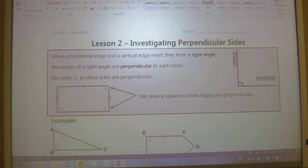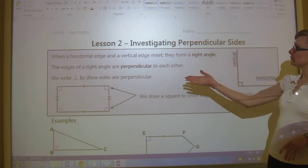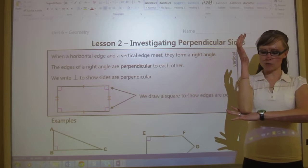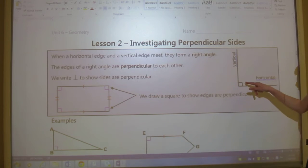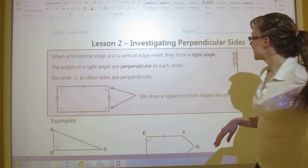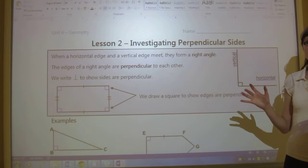So let's go through this together. So it says, when a horizontal edge and a vertical edge meet, they form a right angle. So the angle where my elbow and my hand are, right here, is a right angle, meaning that it can make a square with the angles that it is. That's just what it's called.